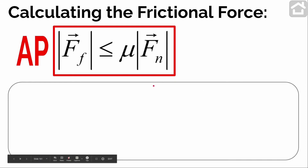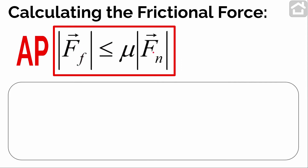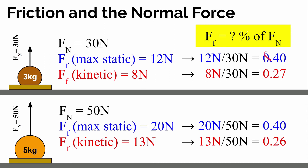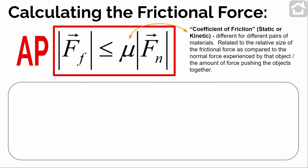Knowing this, we can start to calculate the size of the frictional force — either static friction or kinetic friction — in any situation. This is what the equation looks like on your AP equation sheet: the frictional force is less than or equal to some number times the normal force. This number — kind of a fractional amount of the normal force — is called the coefficient of static friction or the coefficient of kinetic friction. Our static coefficient for the plastic and table surface was about 0.4 and the kinetic coefficient was about 0.26 or 0.27.